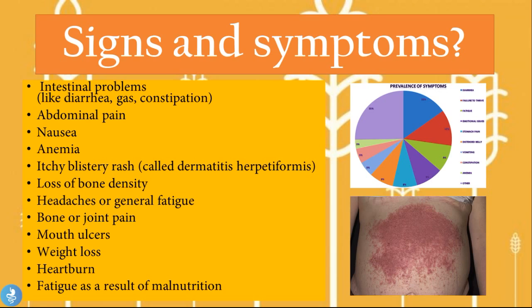So what are the signs and symptoms of celiac disease? These include intestinal problems like diarrhea, gas, and constipation; abdominal pain; nausea; anemia; an itchy blistering rash called dermatitis herpetiformis; loss of bone density; headaches or general fatigue; bone and joint pain; mouth ulcers; weight loss; and heartburn and fatigue as a result of malnutrition.